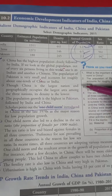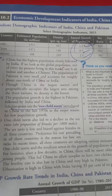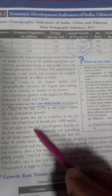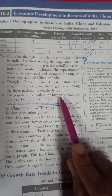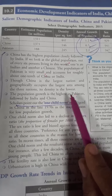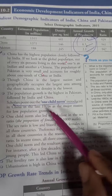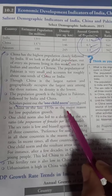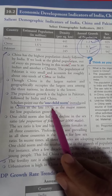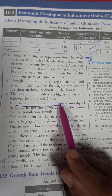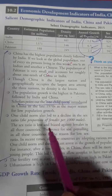Geographically, China is the largest area among the three nations. The population growth rate is highest in Pakistan, followed by India and China. In the late 1970s, China introduced the one-child norm policy.